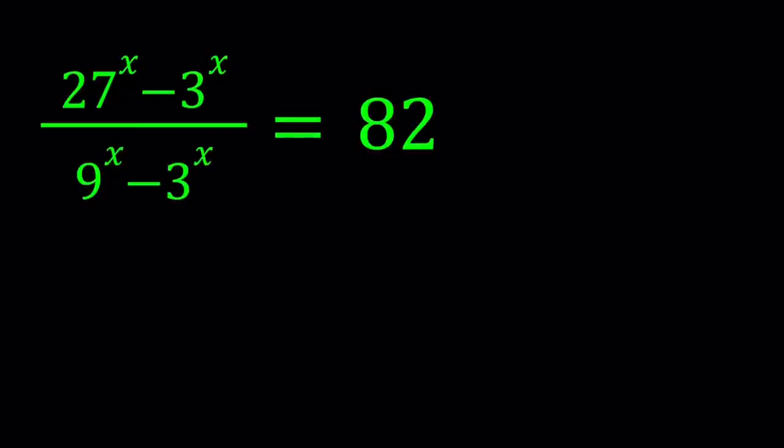Hello everyone. In this video we're going to be solving an exponential equation. We have 27 to the power x minus 3 to the power x divided by 9 to the power x minus 3 to the power x equals 82. And we're going to be solving for x values. I'll be presenting two approaches to this. Let's get started.